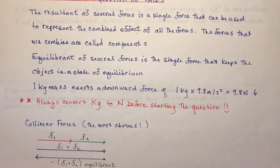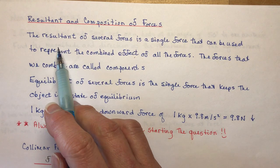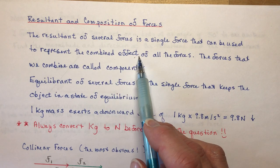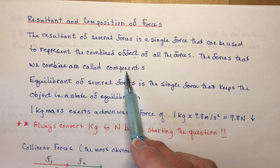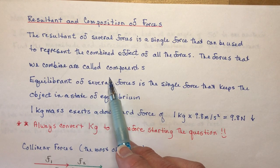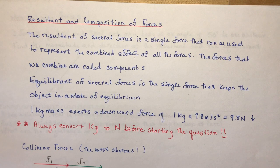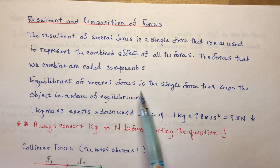Resultant and composition of forces: the resultant of several forces is a single force that represents the combined effect of all the forces. The forces we combine are called components. Think of it simply as a tug-of-war contest — you have a force from one side and a force from the other, and the resultant is the tension on the rope.